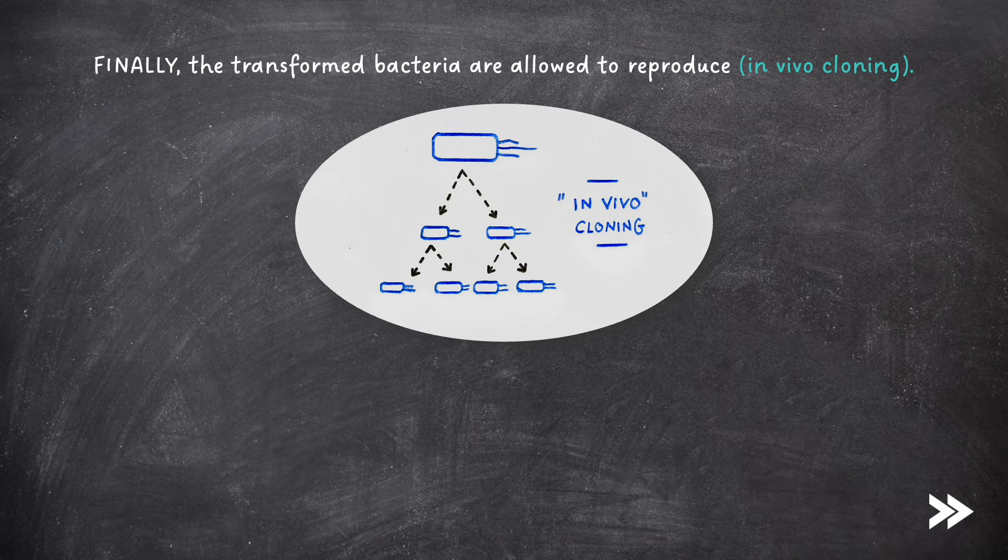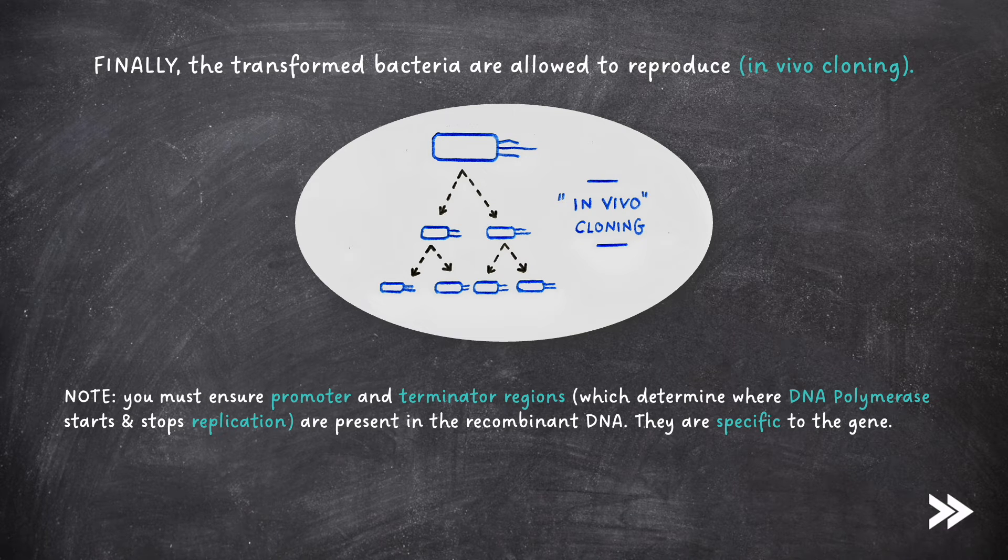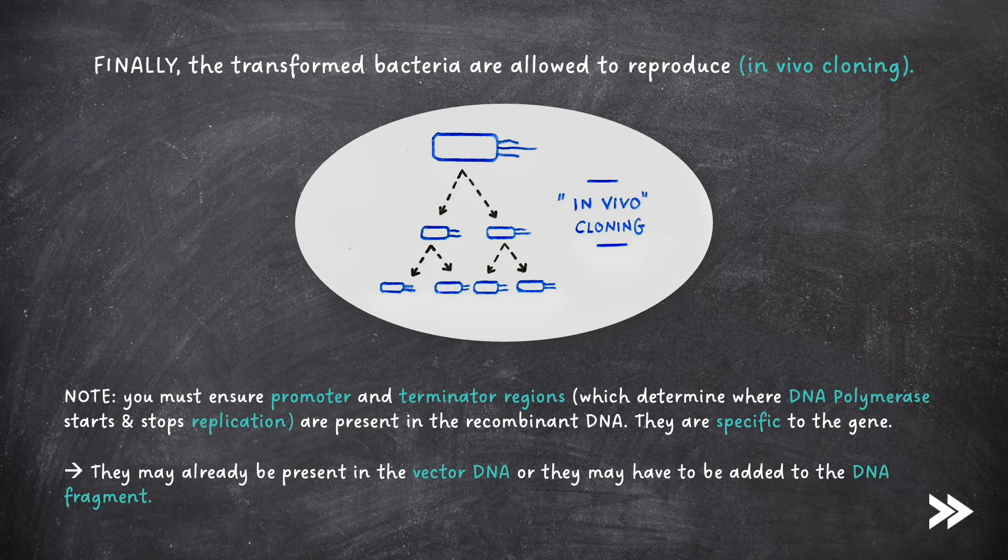Finally, the transformed bacteria are allowed to reproduce. This is an example of in vivo cloning. Note that you must ensure promoter and terminator regions, which determine where DNA polymerase starts and stops replication, are present in the recombinant DNA. They are specific to the gene. These regions may already be present in the vector DNA, or they may have to be added to the DNA fragments.